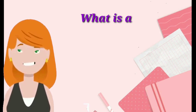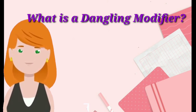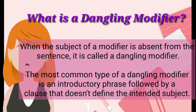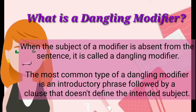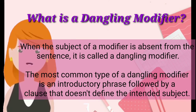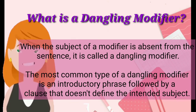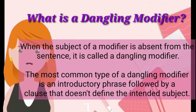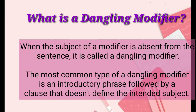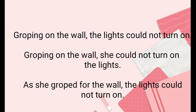What is a dangling modifier? When the subject of a modifier is absent from the sentence, it is called a dangling modifier. The most common type of a dangling modifier is an introductory phrase followed by a clause that doesn't define the intended subject. Let's take a look at these examples.